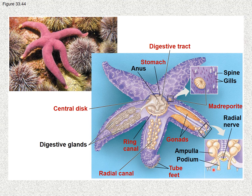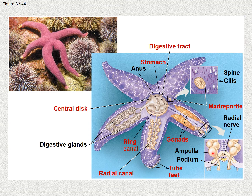Looking at a cross-section of an arm, you can see a radial nerve running along the radial canal, and the ampullae, which are spherical-like structures that are part of the water vascular system. The ampullae lead all the way from the inside of the organism to the outside, leading to the tube feet. The proper name for these is podium — podia are associated with feet.